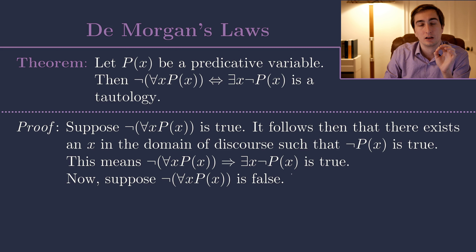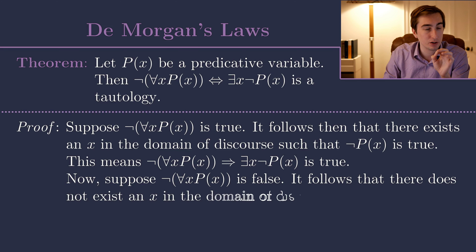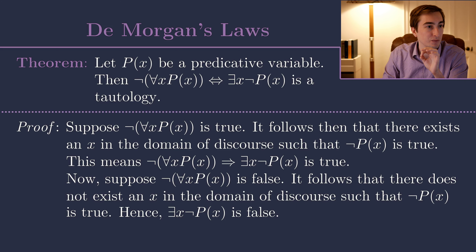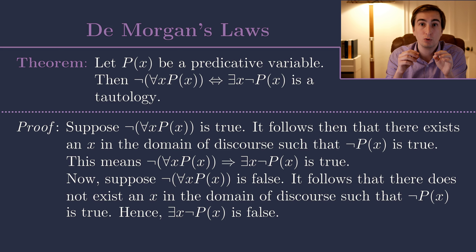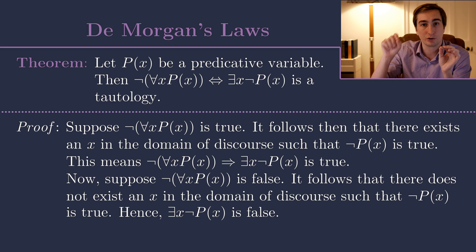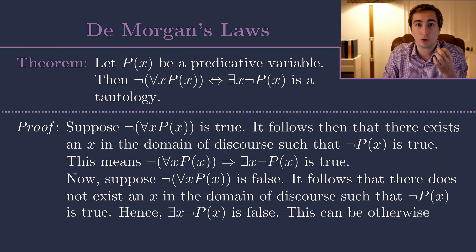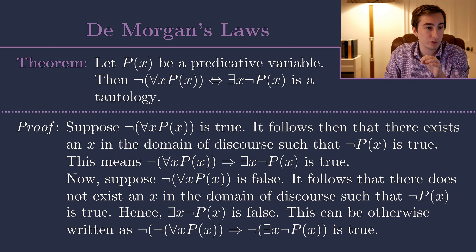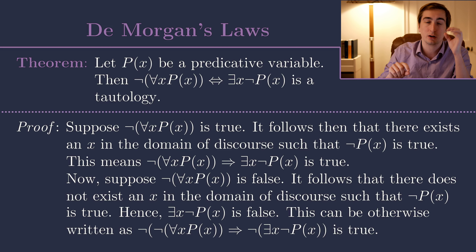In other words, there does not exist an x such that 'not P(x)' is true. We can write that as the negation of the right-hand side: 'not there exists an x such that not P(x)' is true, which means 'there exists an x such that not P(x)' is false. But that's exactly what we wanted to prove — that if the left-hand side is false, the right-hand side is necessarily false. We've proven the contrapositive of the converse, and because that is true, the converse is in turn true. Therefore, we've shown that if the right-hand side is true the left-hand side is true, and if the left-hand side is true the right-hand side is true — we've proven our theorem.